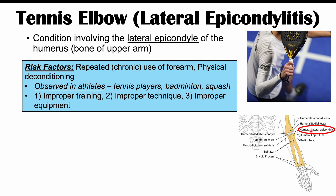Risk factors for this condition include repeated chronic use of the forearm and physical deconditioning — simply being out of shape. This condition is known as tennis elbow because it is often observed in tennis players, but it can also occur in other racket sport athletes, including badminton and squash players. Improper training — using the racket improperly or not being trained correctly — increases the risk.